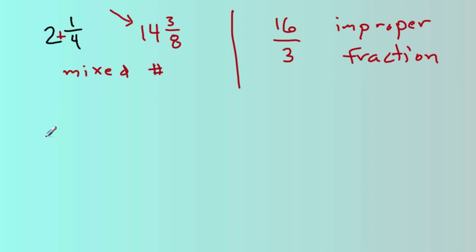What's really happening when we have 2 and 1 fourth is we have to figure out how many fourths there are in this whole number. Well, I see 1 fourth here, but we have to figure out how many fourths are in 2 wholes. And so if I have 2 wholes, and each one of those is 1 fourth, and then I have 1 more fourth, the total is 9 fourths.